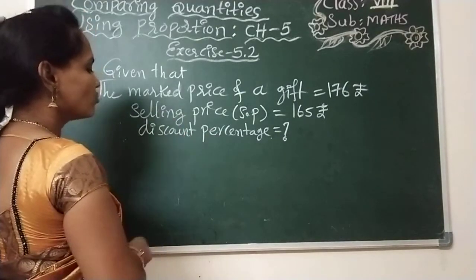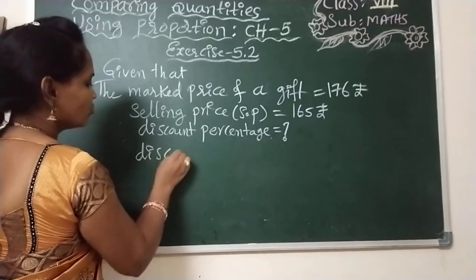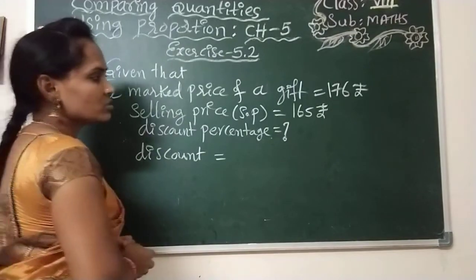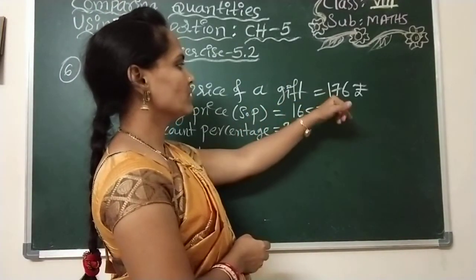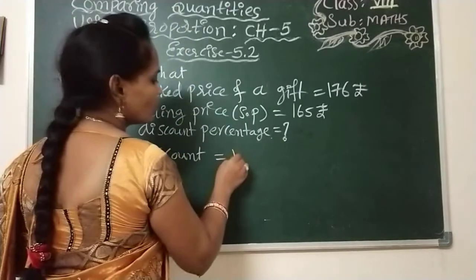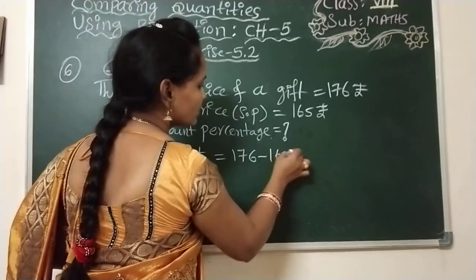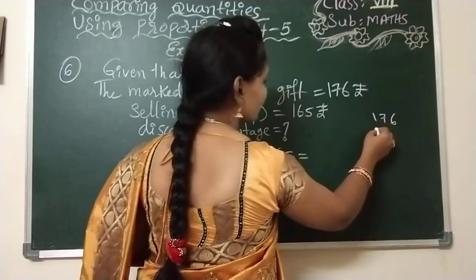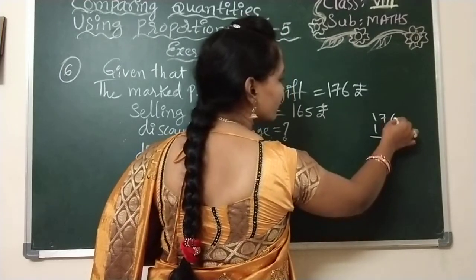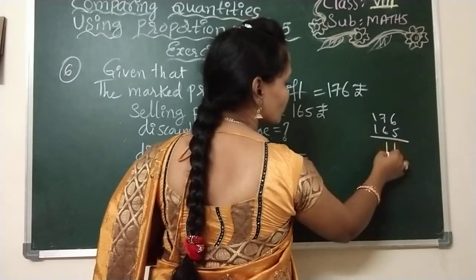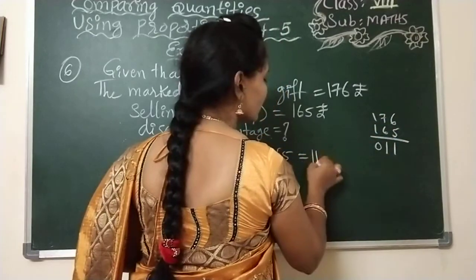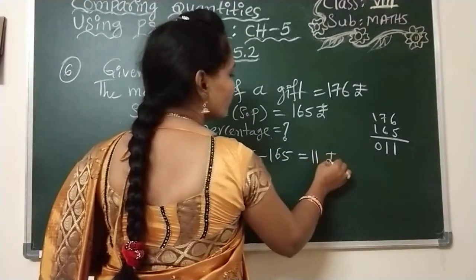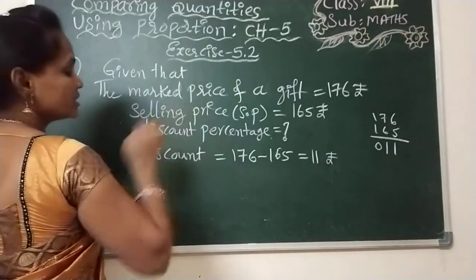How do you get the discount? You have to subtract the selling price from the marked price. So 176 minus 165. If you do the subtraction, see, 6 minus 5 is 1, 7 minus 6 is 1, here 1 minus 1 is 0. So you are getting 11 rupees discount.